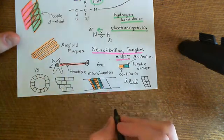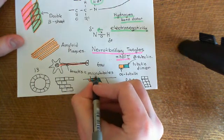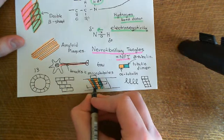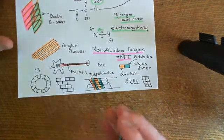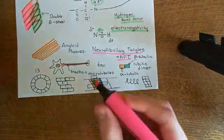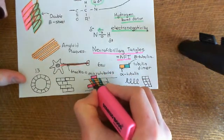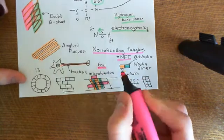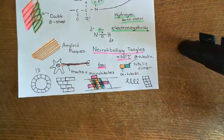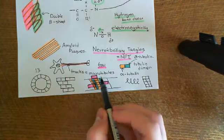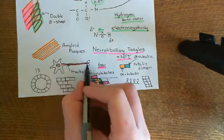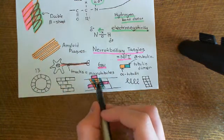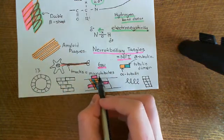Bound to the outside of microtubules, you're going to have these little proteins known as tau proteins — they're all over the place, and they help to stabilise the microtubules. In Alzheimer's disease, what seems to happen is that these tau proteins attached to the microtubules within the axons of these neurons end up getting hyperphosphorylated.